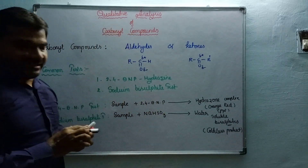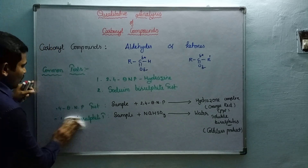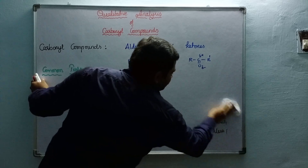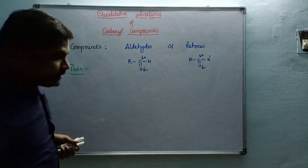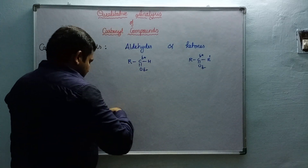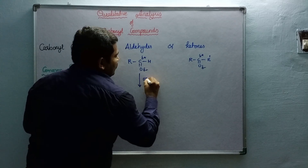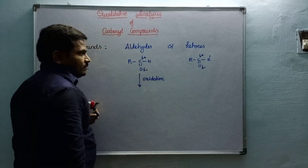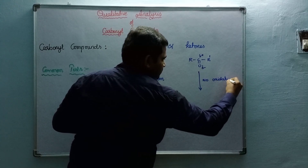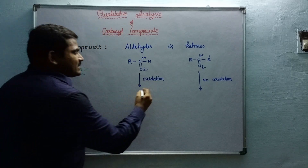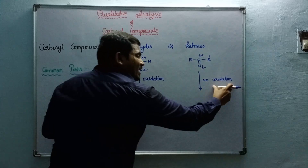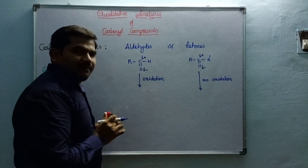Now let us come to specific confirmatory tests for distinguishing between aldehydes and ketones. Since aldehydes are more reactive, they readily undergo oxidation, whereas ketones do not undergo oxidation. So we add oxidizing reagents. If your compound undergoes oxidation, it is an aldehyde; if it does not, it is a ketone.